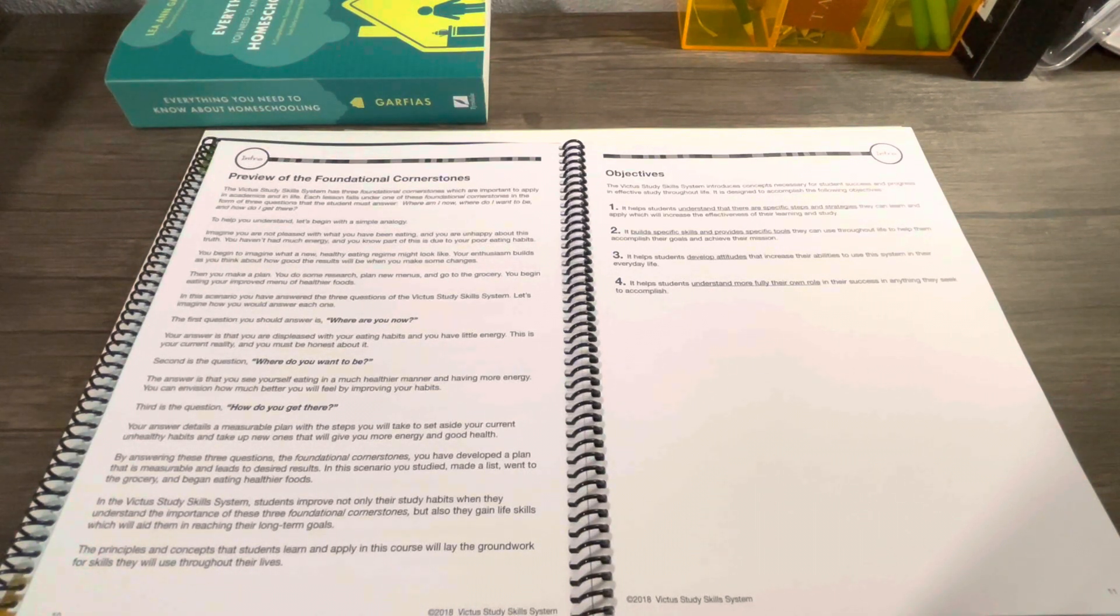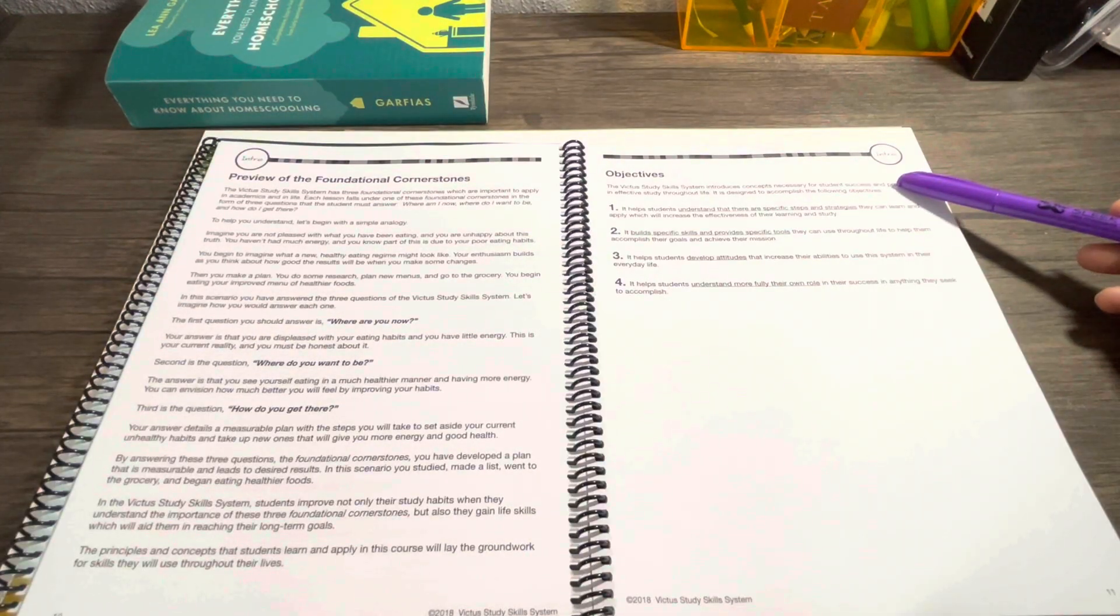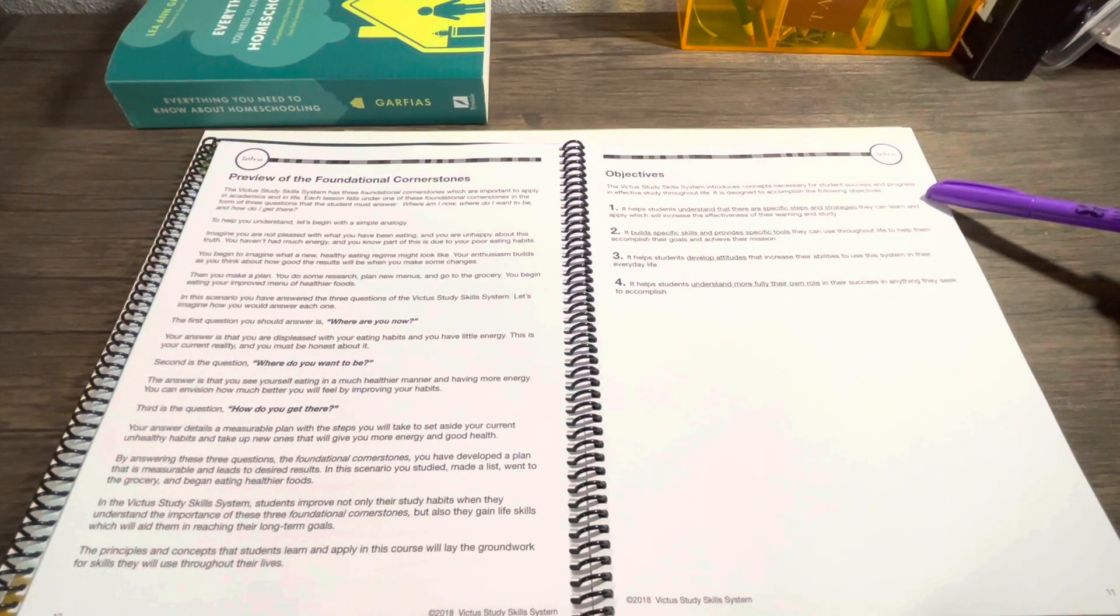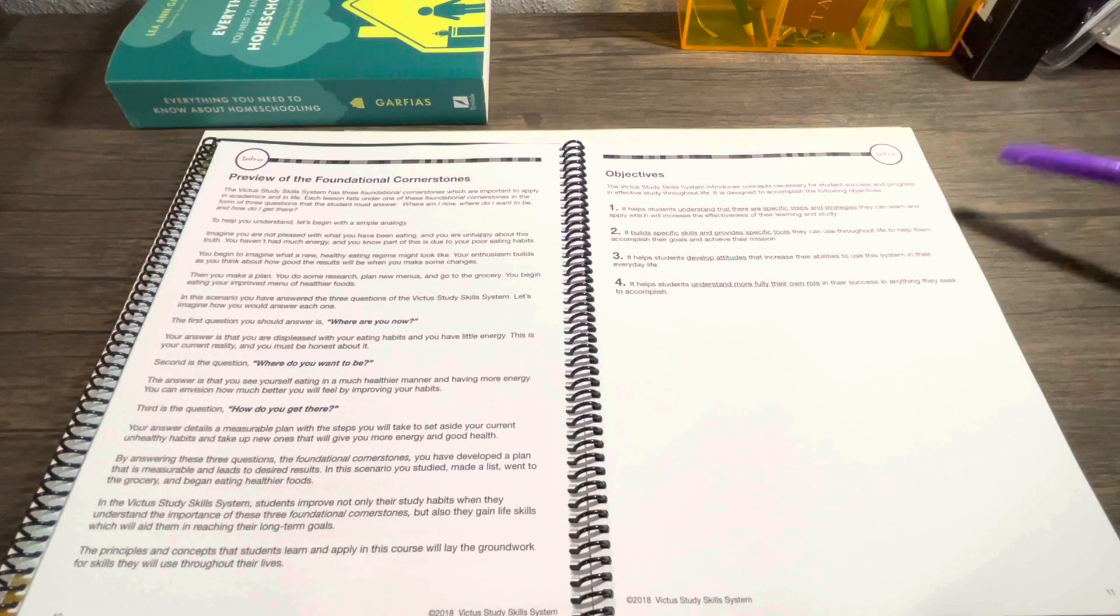It gives you an introduction on how they feel about it: where are you now, where do you want to be, and how do you get there. Basically this system is helping you to answer these three questions. They give you the objectives, so it gives you concepts necessary for student success and progress and effective study throughout life.